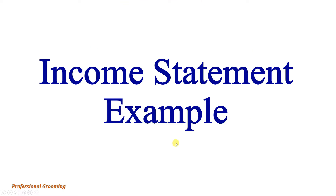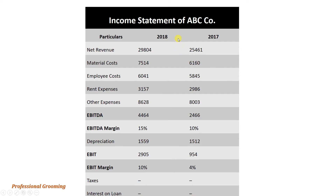Now let's discuss an example. This is an income statement of ABC Company with data for 2018 and 2017. We have net revenues or sales, material costs, employee costs, rent expense, and other expenses. Material costs are the direct costs or cost of goods sold, and the remaining are operating expenses. When we deduct all these expenses from revenue we get EBITDA. The EBITDA margin is 15% in 2018 — calculated by dividing EBITDA by total sales — versus 10% in 2017, showing the company is working more efficiently.